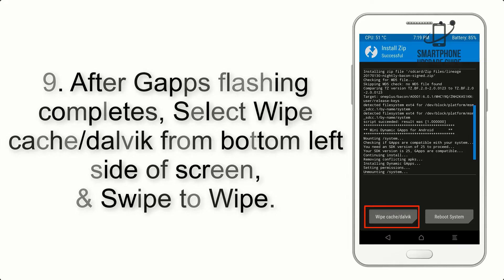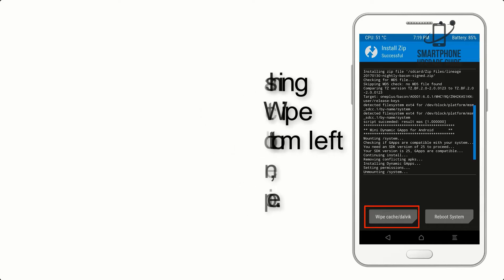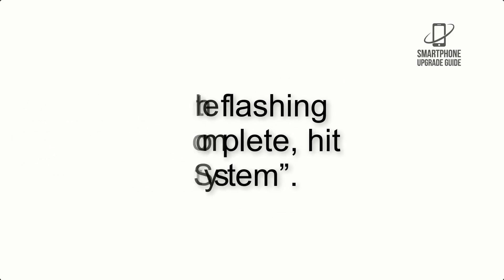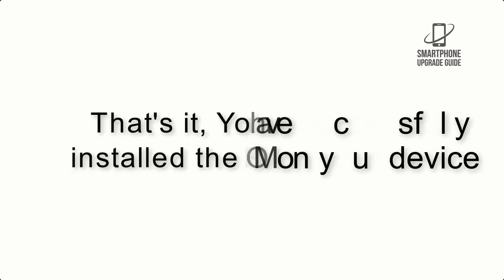Step 9: After GApps flashing completes, select Wipe Cache and Dalvik from the bottom left side of the screen and swipe to wipe. Step 10: When the flashing process is complete, hit Reboot System. That's it — you have successfully installed the ROM on your device.